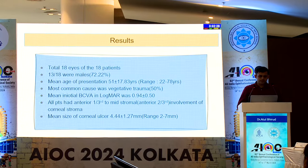Mean initial BCVA in logMAR was 0.94. All patients had anterior one-third to anterior two-third involvement of corneal stroma. Mean size of corneal ulcer was 4.44 mm. Mean depth measured by ASOCT was 306.5 microns. 13 patients had satellite lesions and 3 had hypopyon. 3 out of 18 had centrally located ulcer, 9 had paracentral and 6 had peripheral ulcers. Most common organism isolated was Fusarium followed by Aspergillus.